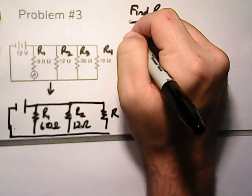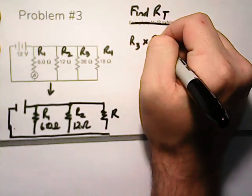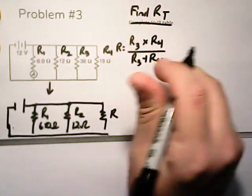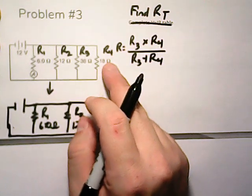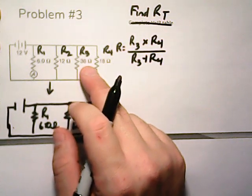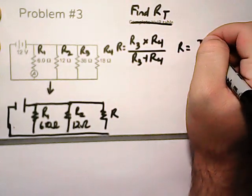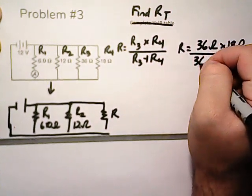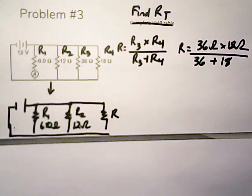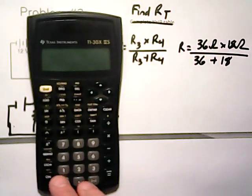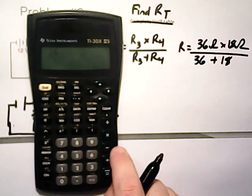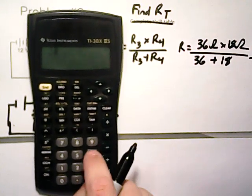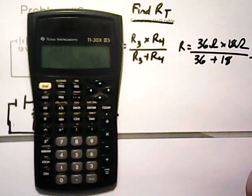Okay, to solve for this, we know R3 times R4 over R3 plus R4 is going to be our combination. So we're going to say R is equal to this. So we have 18 and 36. So R is equal to 36 ohms times 18 ohms divided by 36 plus 18. So for here we just need to solve for it. 36 times 18 we get 648 divided by 36 plus 18. We get 54.